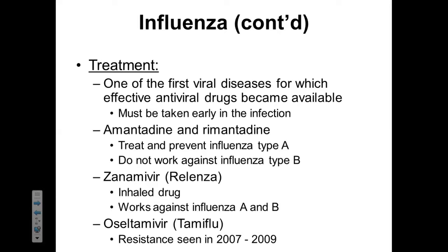Influenza is one of the first viral infections that antiviral drugs were made for. However, these antiviral drugs must be taken very early in the infection to have any benefit. Two antiviral drugs that can be used are amantadine and rimantadine, which prevent and treat influenza type A but not influenza type B. We also have zanamivir, an inhaled drug that works against both A and B. And then there's Tamiflu, which is starting to fall out of favor because resistance to Tamiflu has been emerging within patient populations.